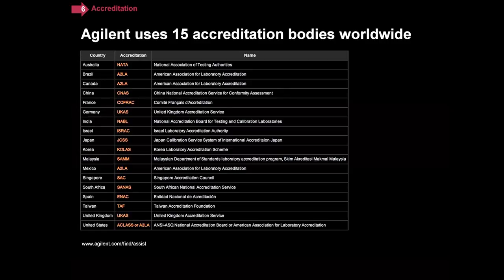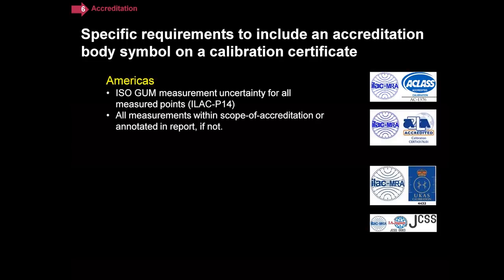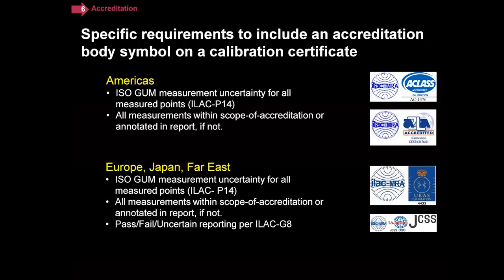Sometimes I get asked: are there specific requirements when you want the accreditation body logo on a calibration certificate? And there are. In the Americas, you have to provide the measurement uncertainty — this is according to ILAC P14 — and all measurements must be within the scope, or if they're not, you have to report it. In other regions — Europe, Japan, and the Far East — those first two conditions are the same, and most accreditation bodies there also ask you to do your pass-fail reporting according to ILAC G8. We have specific services targeted at that, so if that's what you need, that's what you can get.